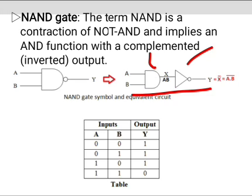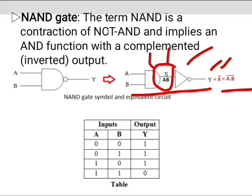If X is the output of the AND gate, then for a two-input AND gate, X equals A·B, since the AND function is multiplication. Since X is the input to the NOT gate, the output Y of the NOT gate is given by Y equals X complement, which equals A·B complement. So the output Y is the NOT of the AND gate output.